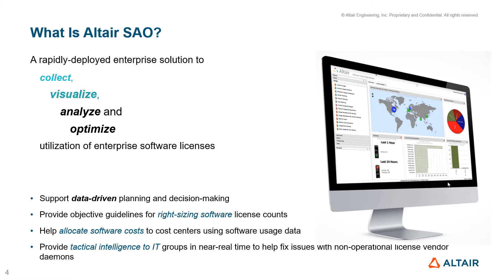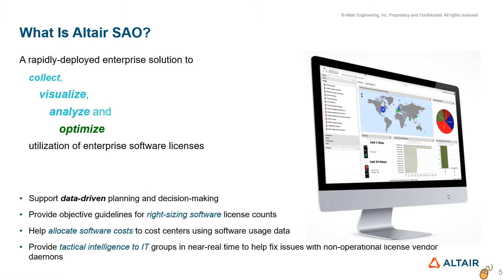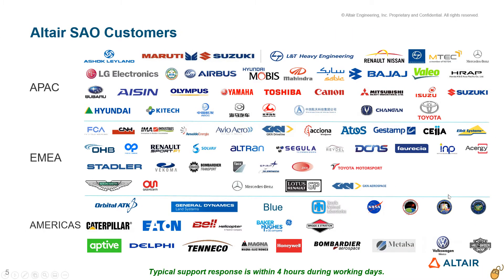SAO is built to collect, visualize, analyze, and optimize utilization of enterprise software licenses. It will be extended to track node-lock licenses by the end of 2020. SAO has been adopted by over 110 companies globally. Some installations track over 250 vendor daemons and 40,000 users. SAO is supported by a very responsive global team.